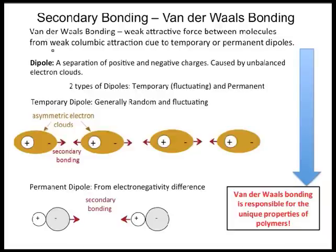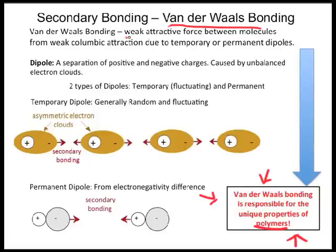Secondary bonding, also collectively known as van der Waals bonding, is much weaker than the three types of primary bonding. Van der Waals bonding accounts for the unique properties in polymers, which is very important to remember. Unlike the three primary bonds, van der Waals bonds do not directly involve outer electron interaction. By definition, van der Waals bonds are weak forces between molecules caused by dipoles being attracted to one another.